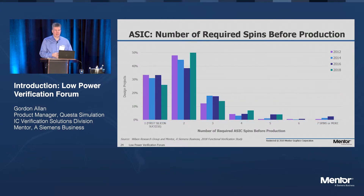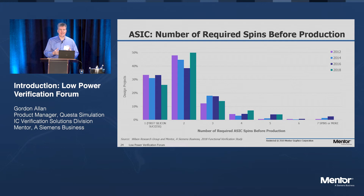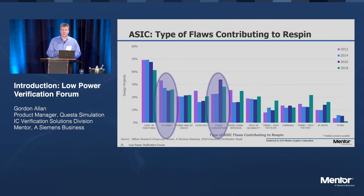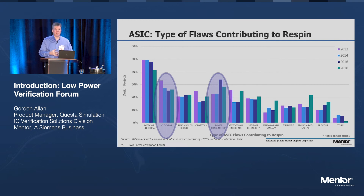Thoroughness of verification is what it's all about. Our survey shows that most ASICs still require one or two spins before going into production — quite consistent from 2012 to 2018. The chips are getting more complex, our problem space is growing, and we need to keep up with techniques and technologies to achieve thorough verification. Looking at the causes of re-spins, logic and functional bugs are always the most significant, but power and clocking concerns are quite significant too. With multiple clock domains, power islands, UPF, and voltage scaling, we need a layer of verification rigor, methodology, and tools to help.